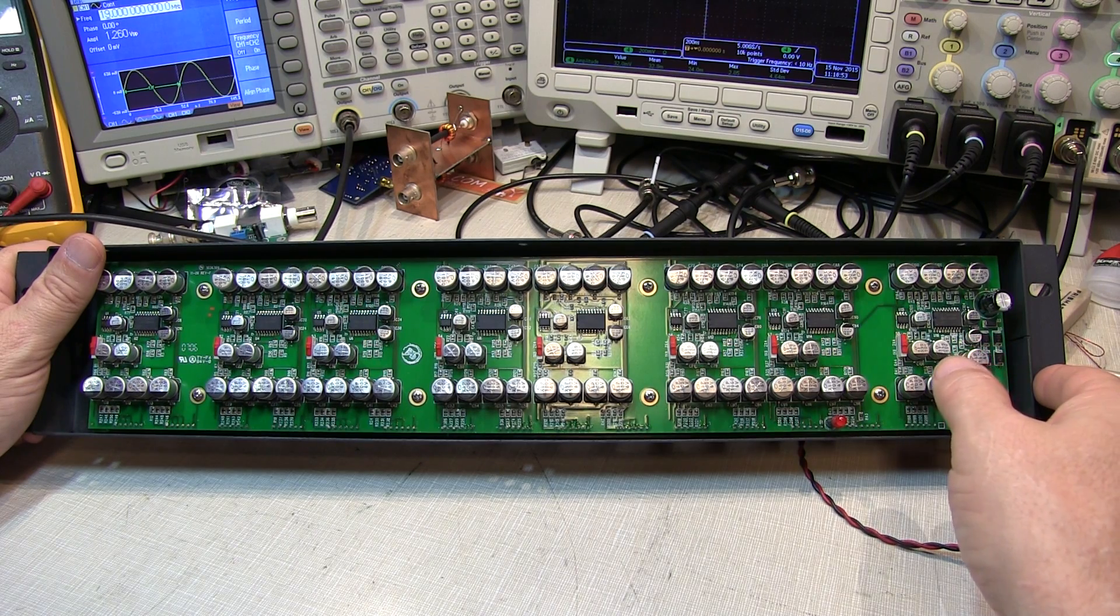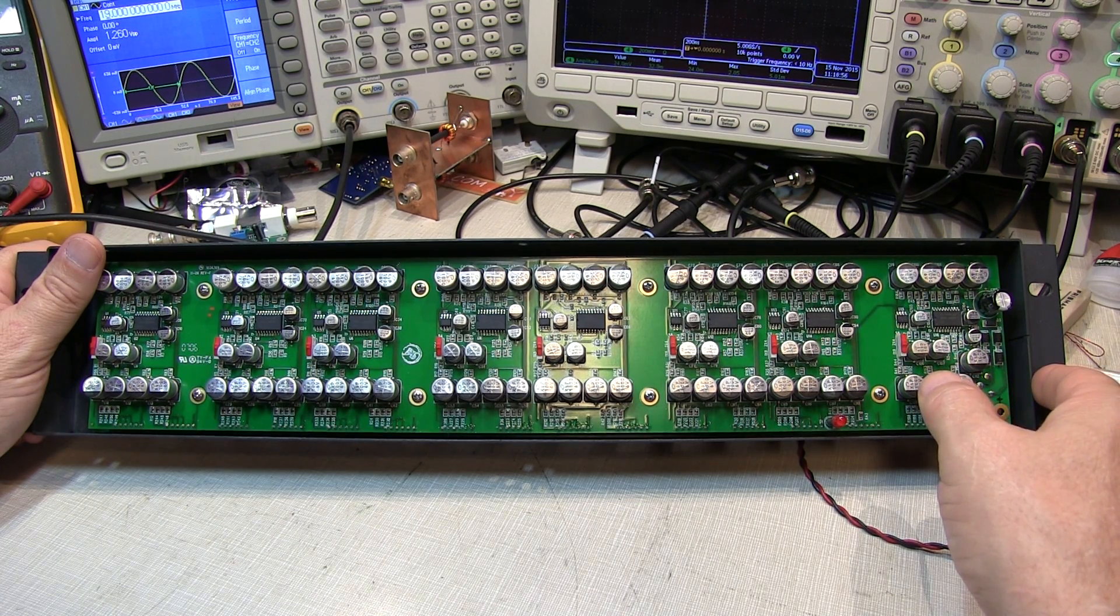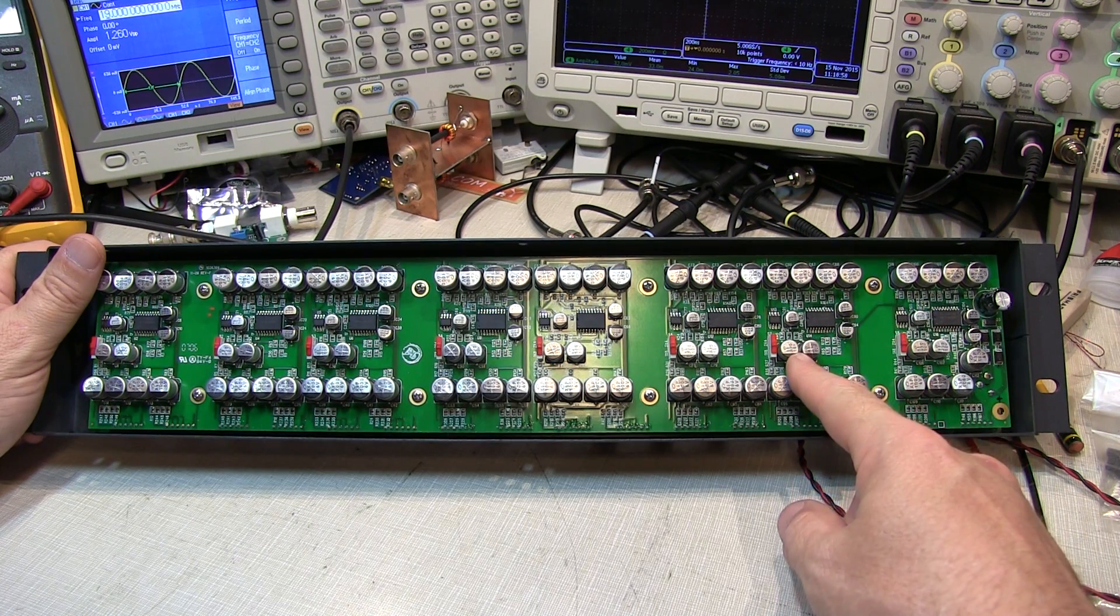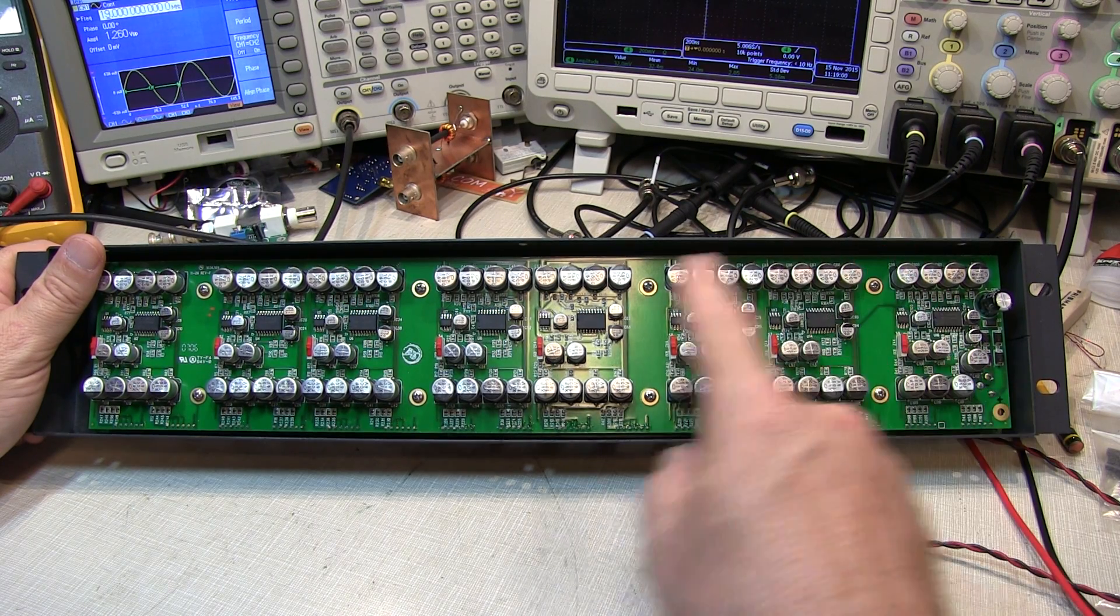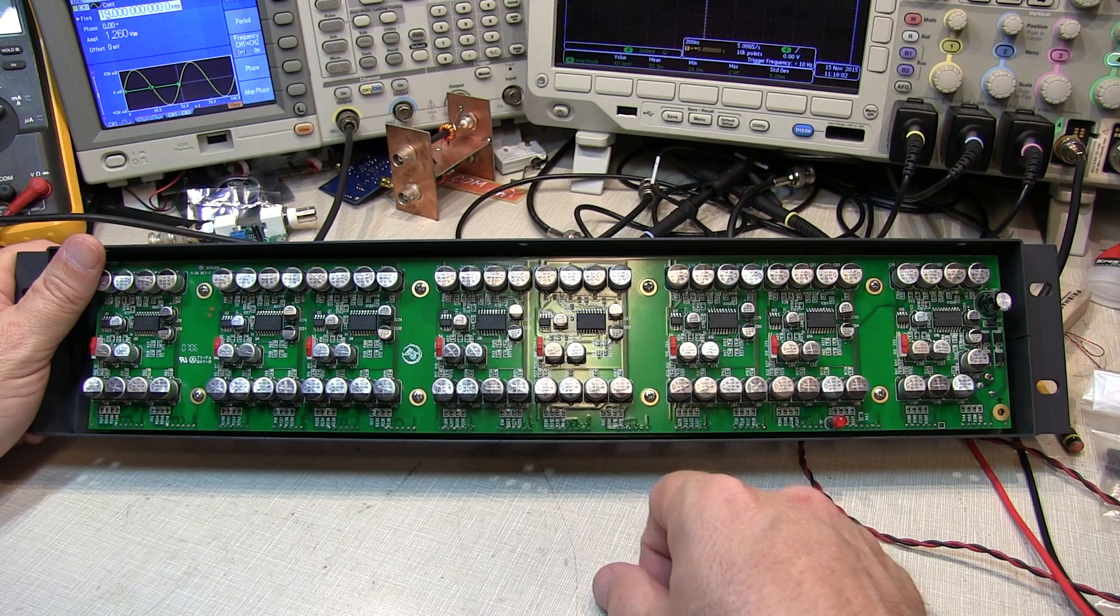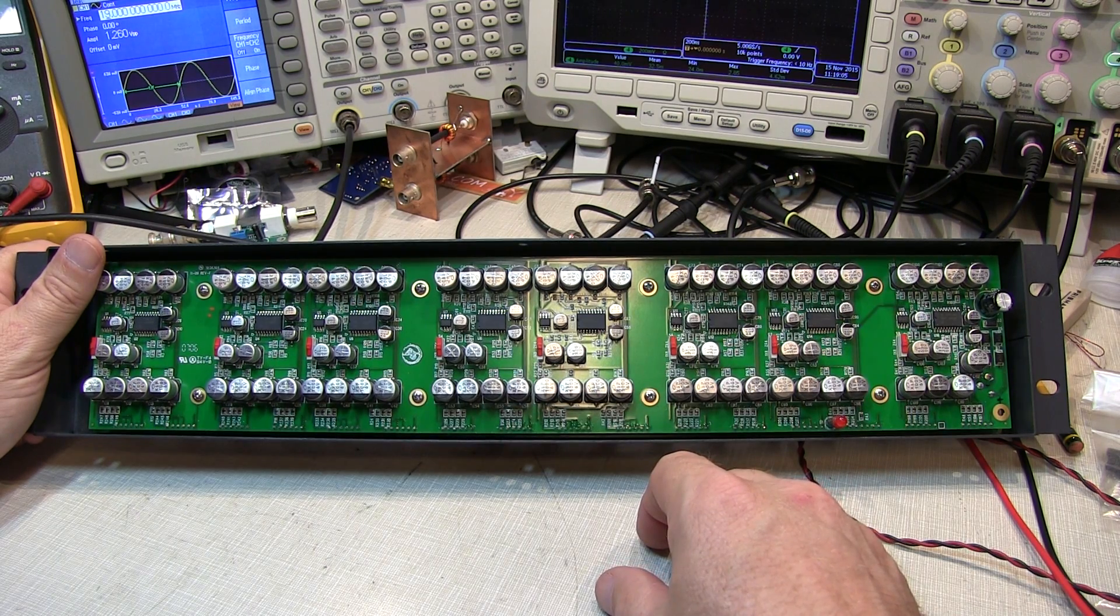Now by using something like a GPS disciplined reference oscillator or rubidium oscillator, I could use that as a master reference for most of the equipment here in the lab using this as a distribution amplifier to send that 10 megahertz reference to all of the equipment making it all locked together and making some measurements more accurately.